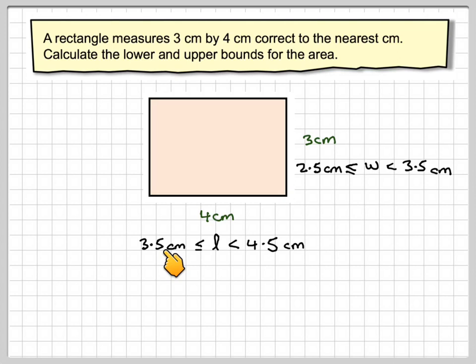So the lower bound for the lengths is going to be 3.5cm and 2.5cm. And the upper bound for the lengths is going to be 4.5cm and 3.5cm.